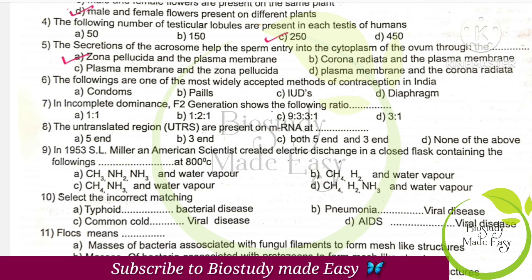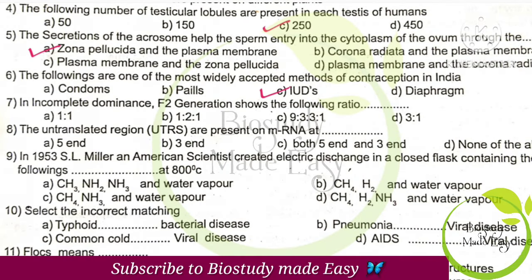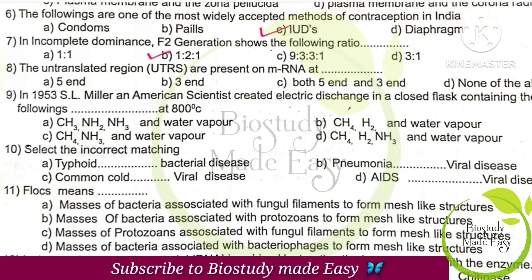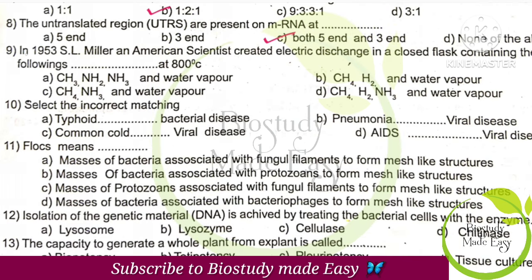The most widely accepted method of contraception in India is option C, IUDs. In incomplete dominance, the F2 generation has the ratio 1:2:1. The untranslated regions (UTRs) are present on mRNA at both 5' and 3' ends.